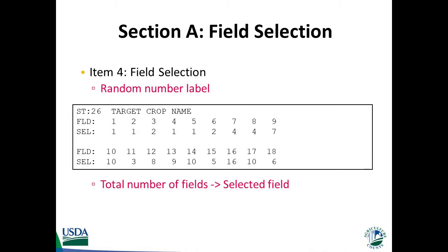Randomness of field selection is another essential element in making accurate estimates for the whole target commodity enterprise from just one selected target commodity field. The enumerators must not allow the operators to select the field for the interview. They may bias the estimate by choosing their best fields or the ones they consider average, which would mean the results would not represent all fields of the target commodity grown for the current year crop.